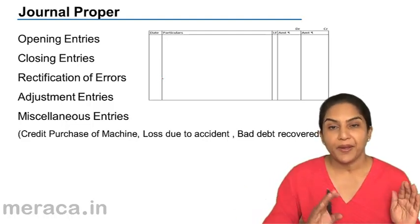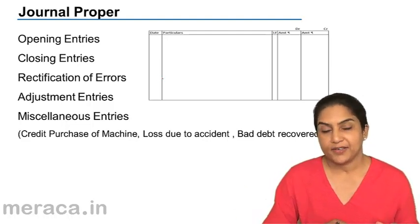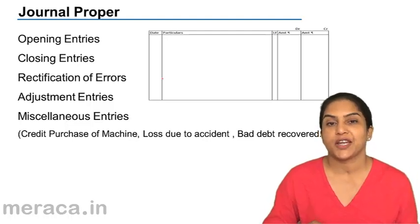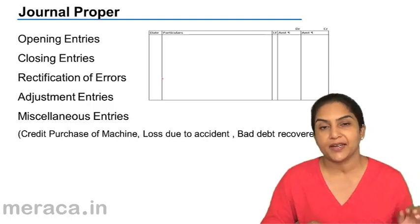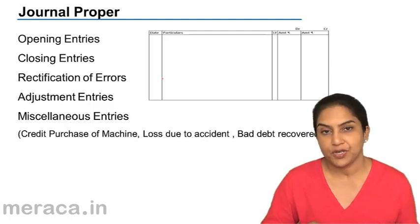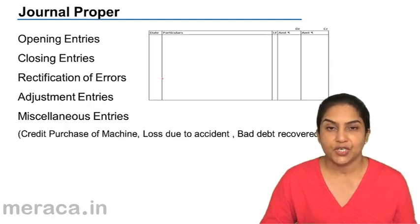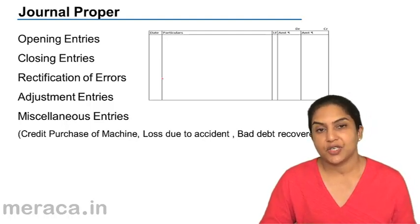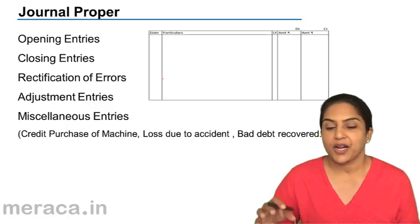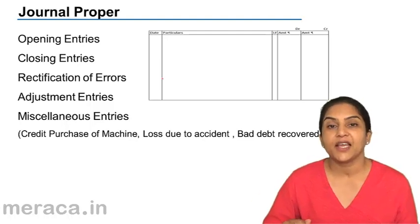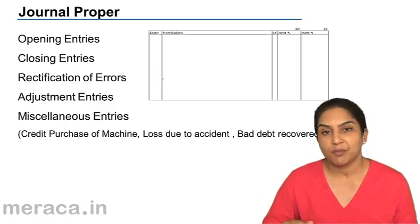Entries which cannot be entered — transactions which cannot be entered in the cash book, in the purchase book, the sales book, purchase return, or sales return — they would ultimately find their place in the journal proper.